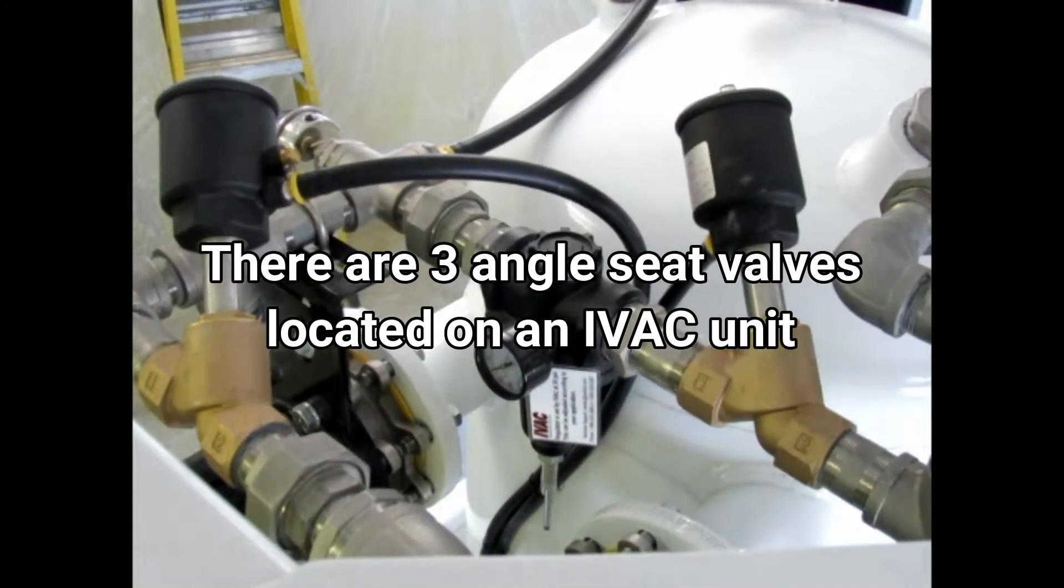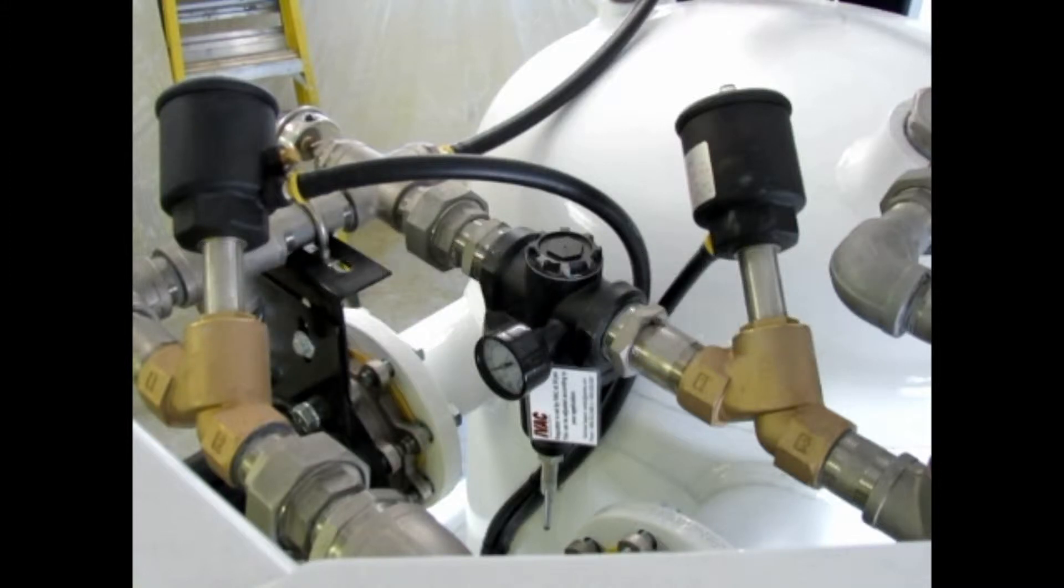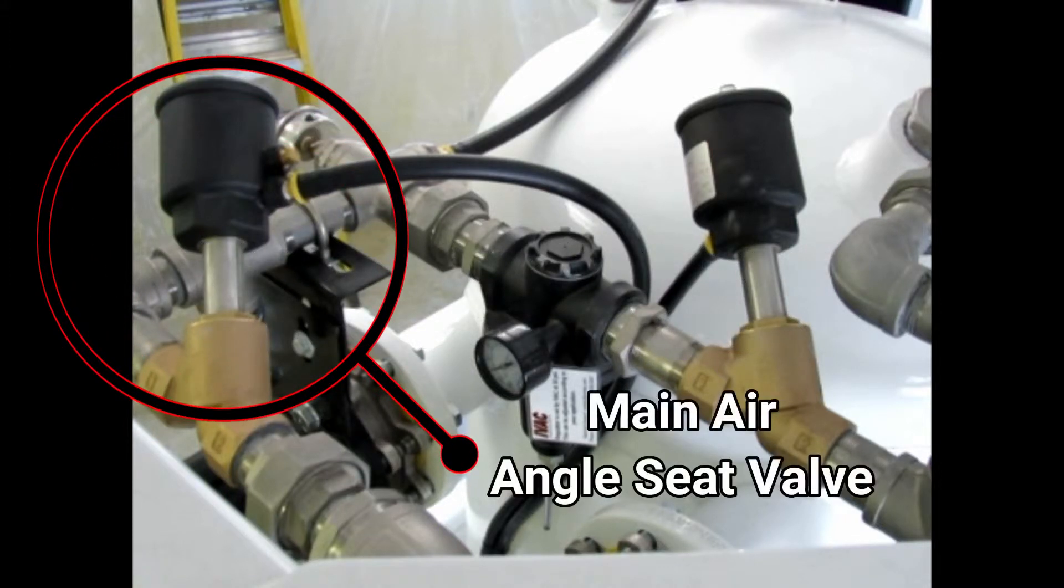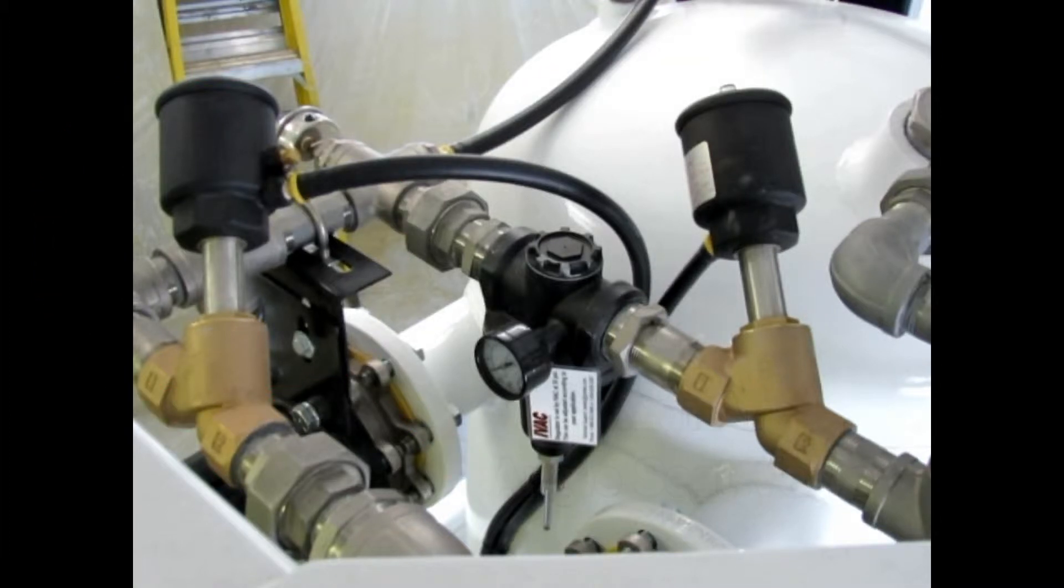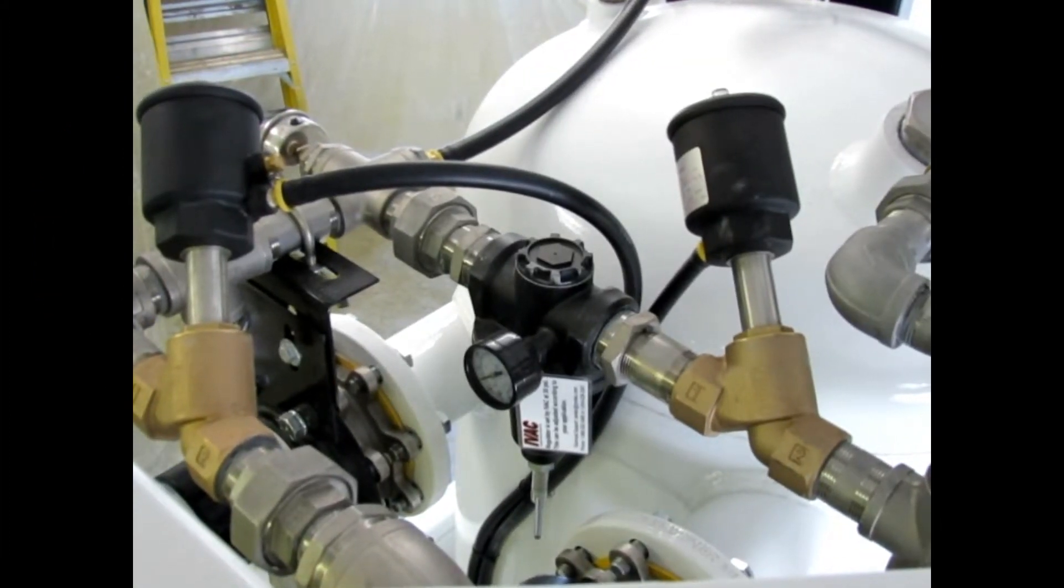The main air angle seat valve allows air to travel through the venturi to create a low pressure area in the vessel. Atmospheric pressure pushes material into the vessel through the hose connected to the intake cam lock fitting.